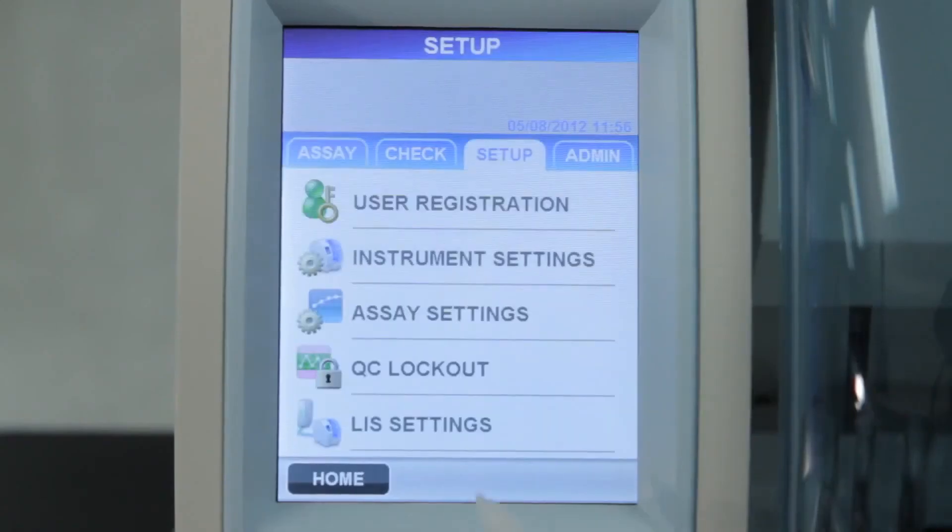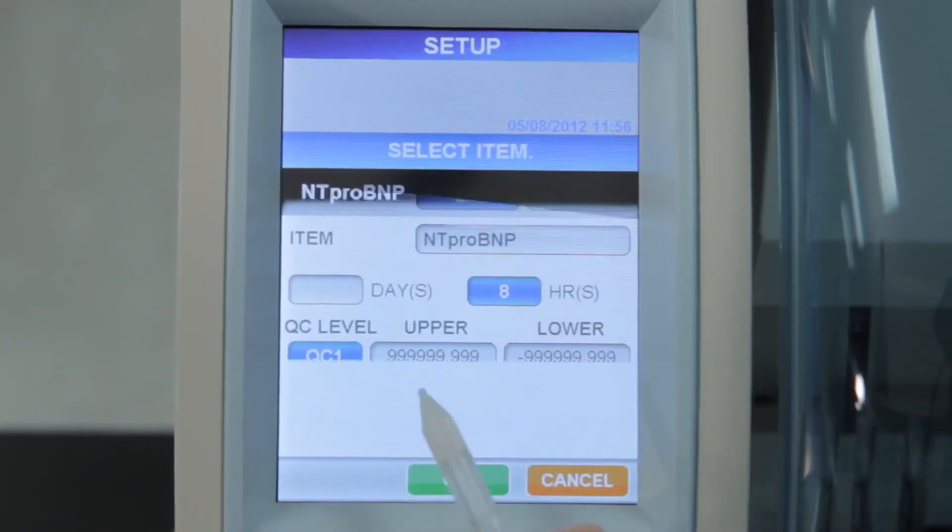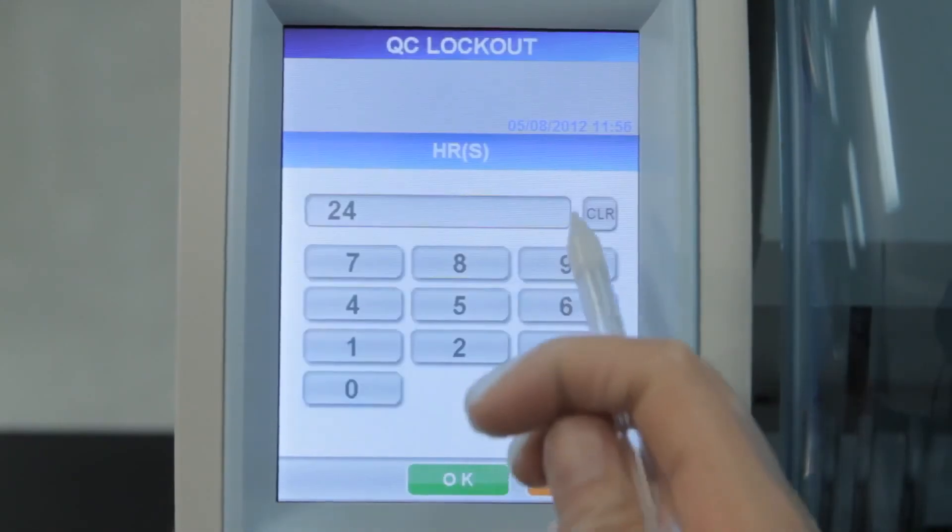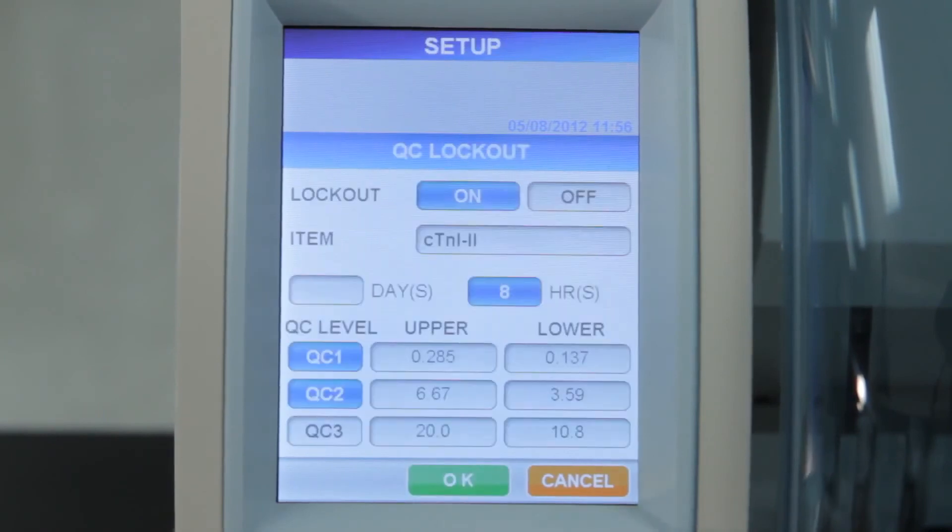The PathFast also provides a lockout feature for calibration, QC, and cartridge expiration. The PathFast will not allow testing due to quality control expiration, quality control failure, infrequent calibration, or reagent expiration.